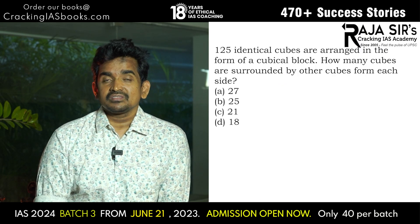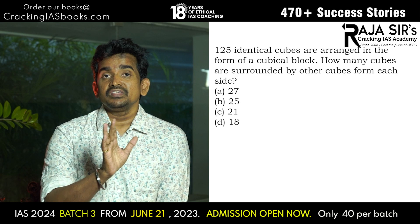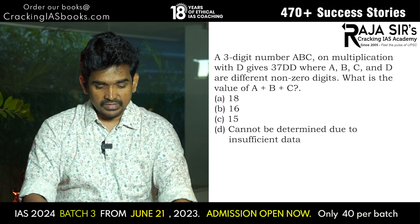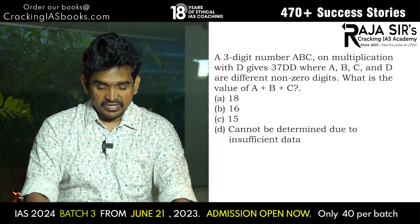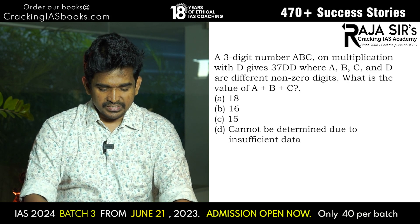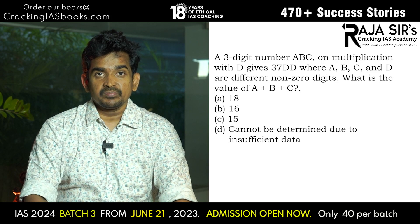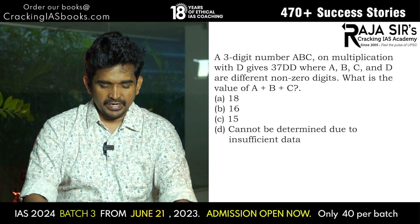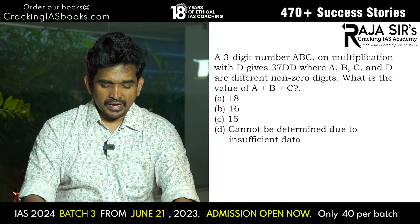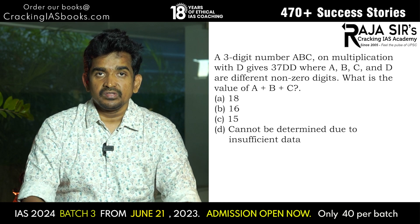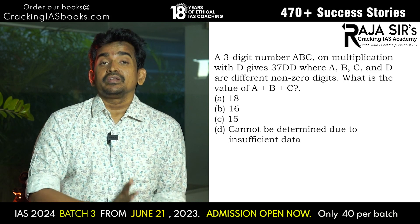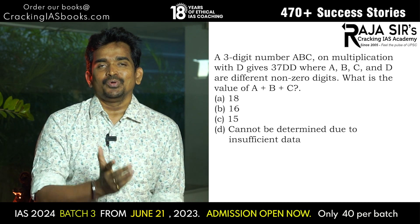Problem number 2: a 3-digit number ABC, on multiplication with D, gives 37DD, where ABC and D are different non-zero digits. What is the value of A+B+C? Option A: 18, Option B: 16, Option C: 15, Option D: cannot be determined due to insufficient data. This problem is very simple if you think in a logical way.